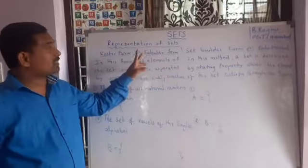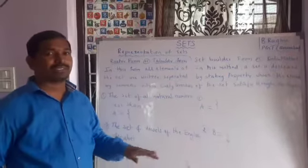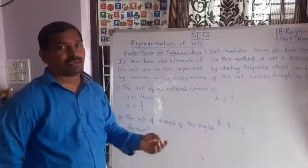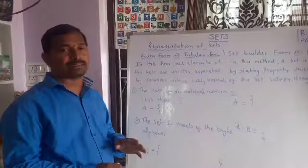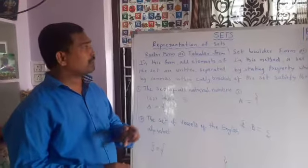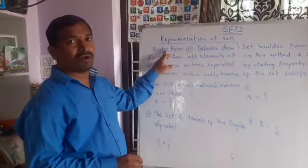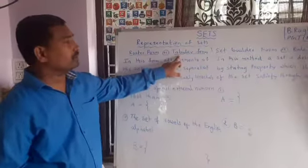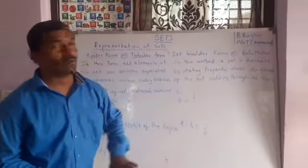Today let us discuss representation of sets. We already discussed the definition of sets and elements. Now, how to represent sets? There are two forms: one is roster form, also called tabular form, and the second one is set builder form, also called rule method.